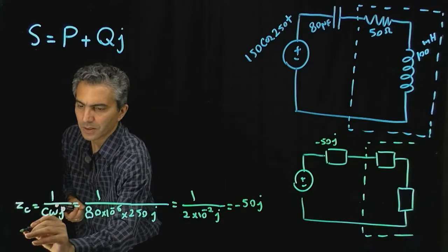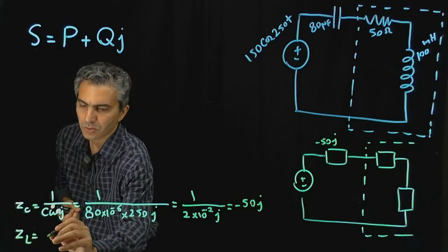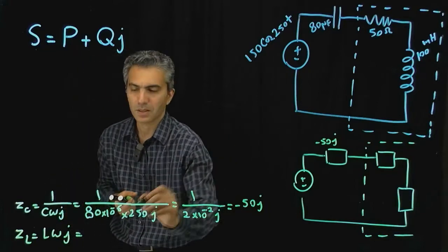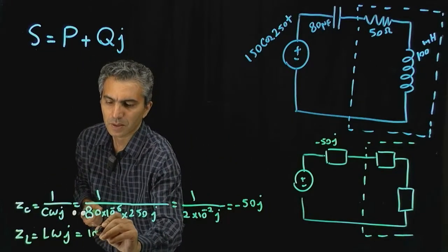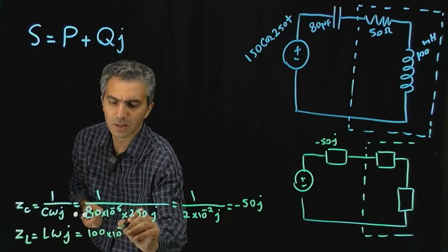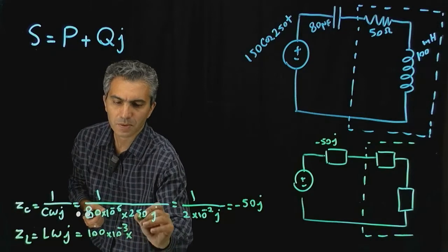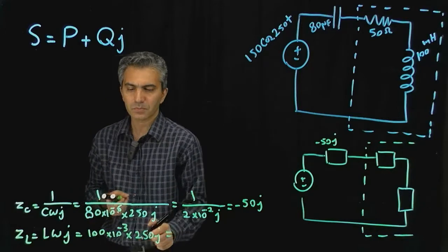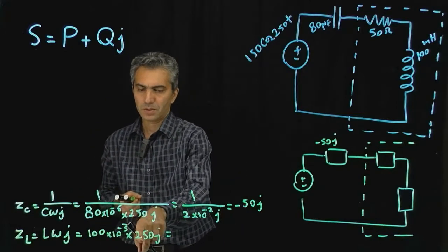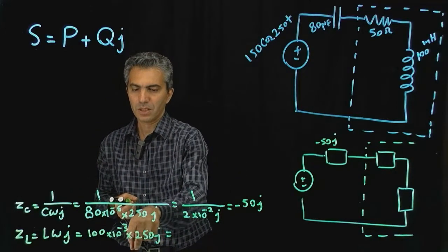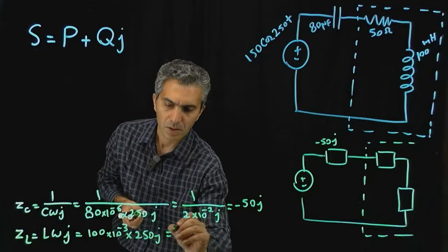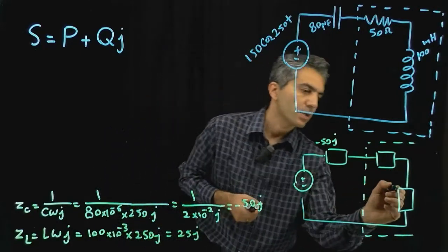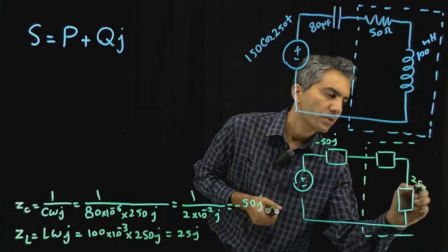For the inductor, Zl equals L·ω·j. That's 250×10⁻³ times 250j, which gives 25j. So that goes right here — that's 25j.